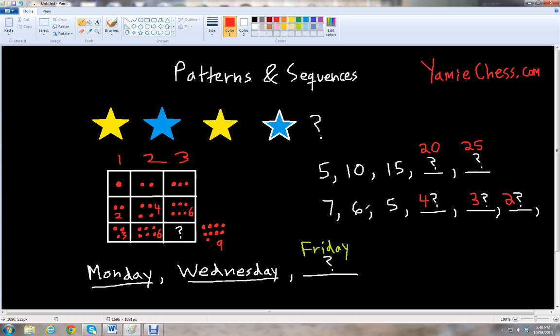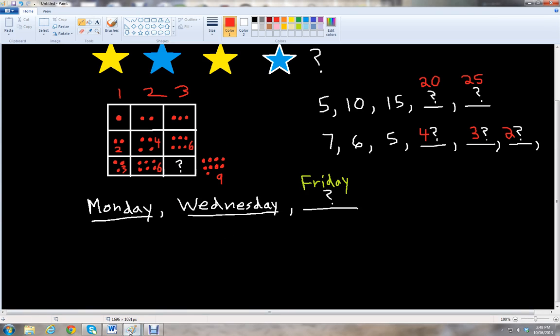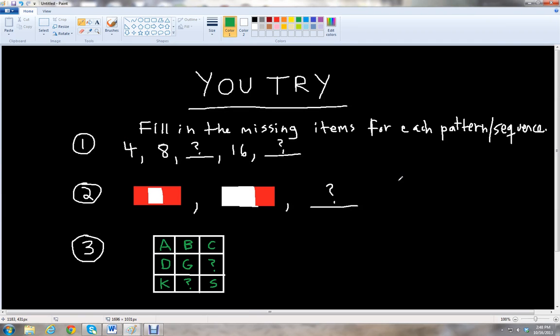So those are just a few patterns and sequences examples that we have worked on. And what I'm going to do is give you some problems for you to try on your own. So for these three problems, fill in the missing items for each pattern or sequence. And so on the first problem, we have given two numbers. We have four, eight, an unknown number, then we have sixteen, and then another unknown number. So you want to find those two unknown numbers in the sequence.